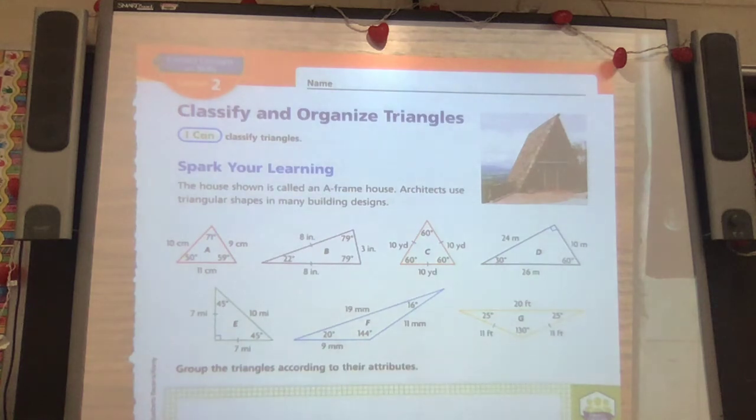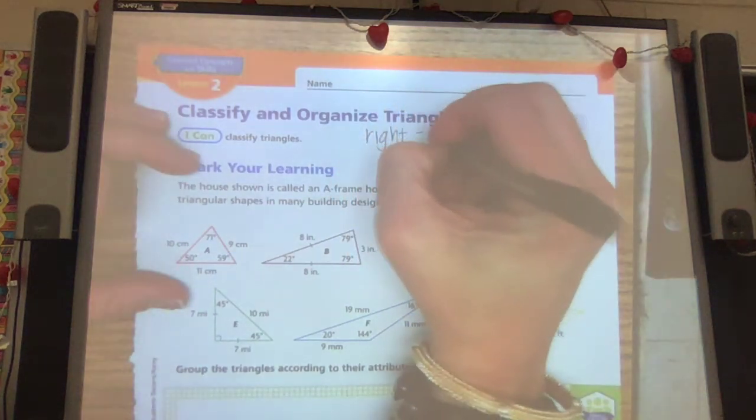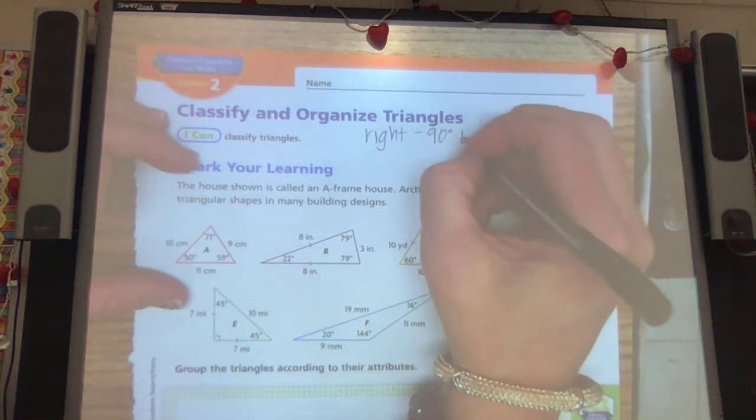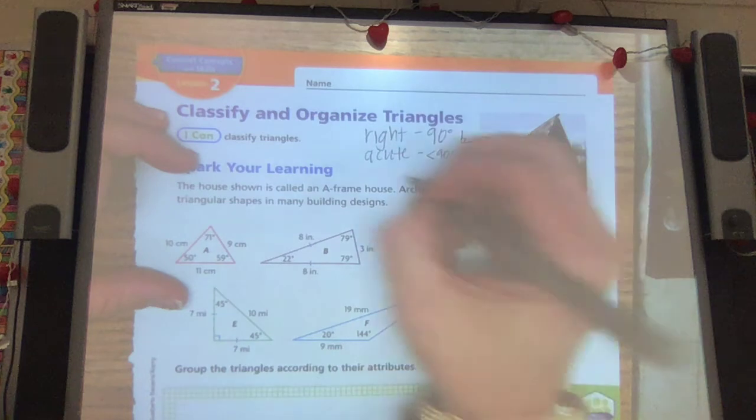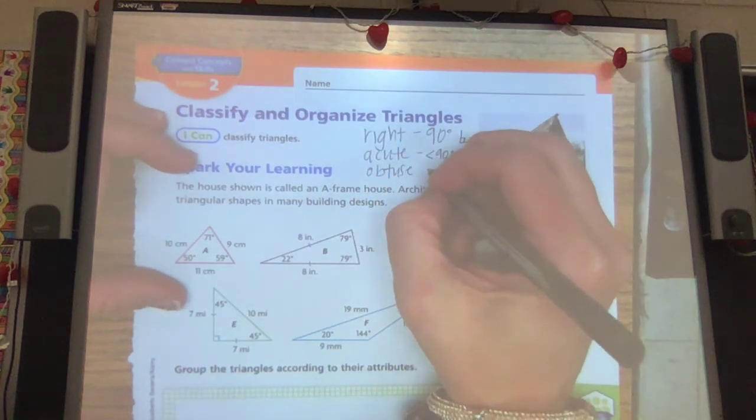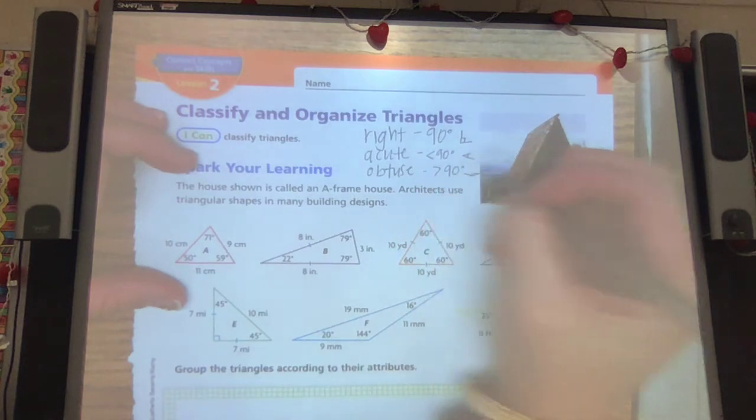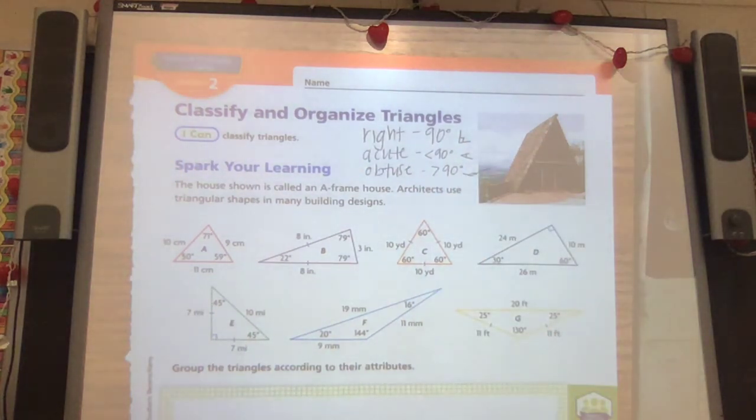We can classify triangles by their sides or by their angles. So remember we talked about angles as being right, 90 degrees, acute, less than 90 degrees. So I'm going to write right, 90 degrees, looks like an L. Acute, less than 90. And obtuse, greater than 90. So we're going to look at our triangles, look at their angles, look at their sides, and try to classify them.